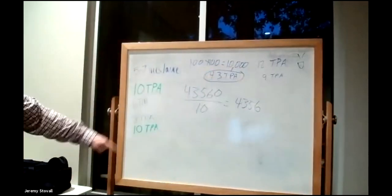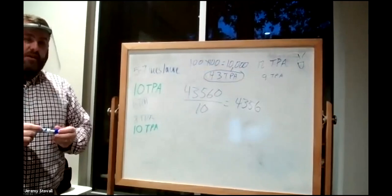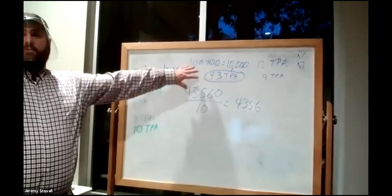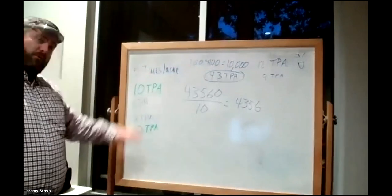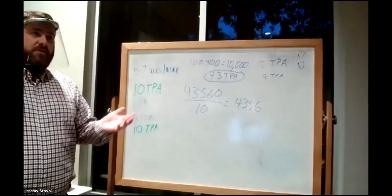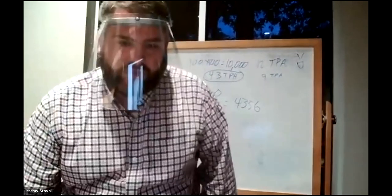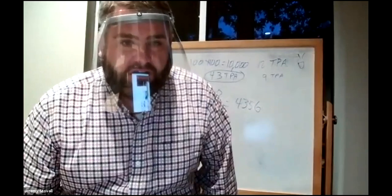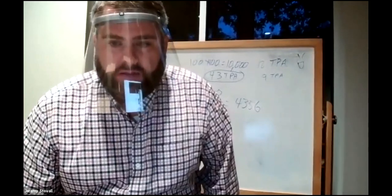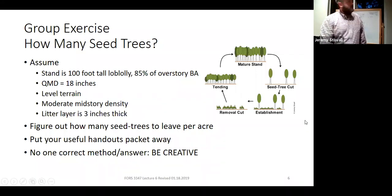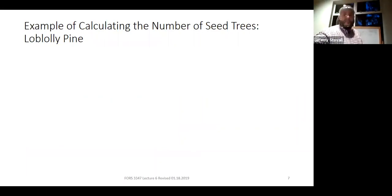That would be one approach where you can use geometry, or you could just come up with a reasonable guess. Let me show you another possible option. This is one example of some calculations you could use, and you need to know a number of different things to get the right number of trees per acre.